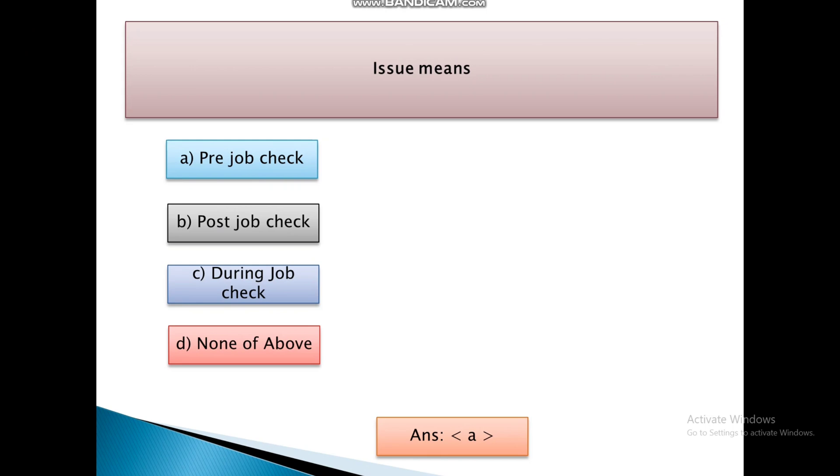Issue means: pre-job check, post-job check, during job check, and none. And the answer is A, that is issue means pre-job check. In permit to work system, a document is: oral, return, visual, and none. And the answer is B, that is return. Confined space includes: storage bins, silos, tanks, and grounds. And the answer is B, that is silos.